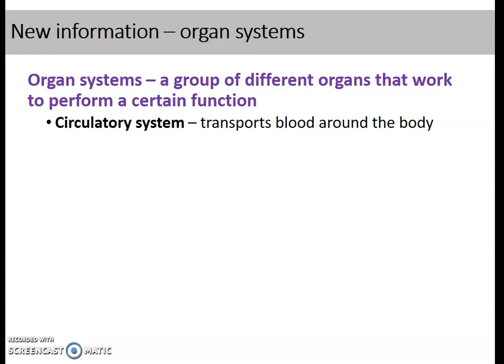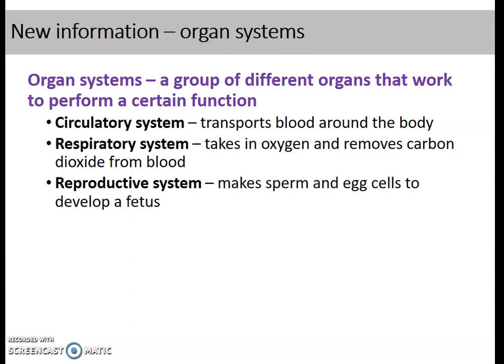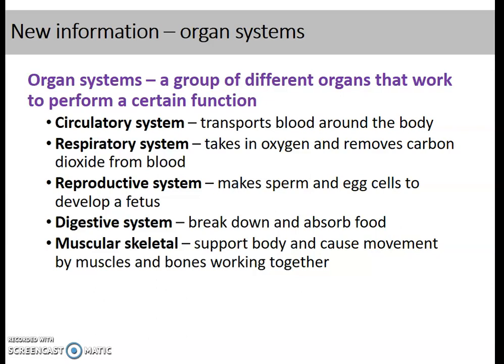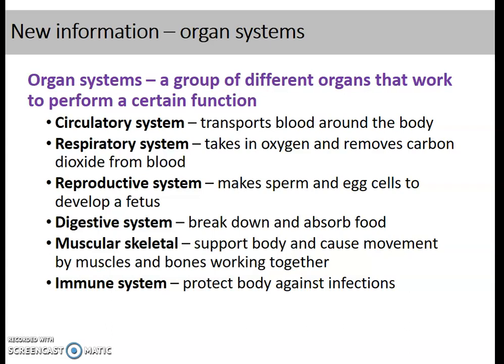There are various different organ systems. The circulatory system transports blood around the body. The respiratory system takes in oxygen and removes carbon dioxide — carbon dioxide can build up and be poisonous. The reproductive system develops a fetus, with sperm in males and eggs in females. The digestive system breaks down and absorbs food. The musculoskeletal system supports the body and causes movement through muscles and bones working together. The immune system protects the body against infections. If you want to research more about each system, email your teacher.